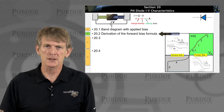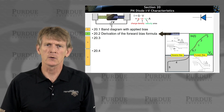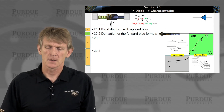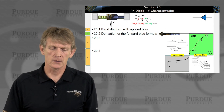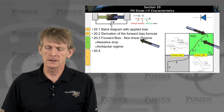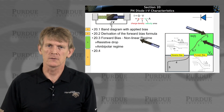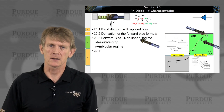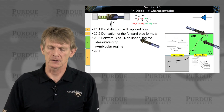So we have an expression for the forward bias. Now we're going to look at some nonlinear regimes in the forward bias direction in the next segment.